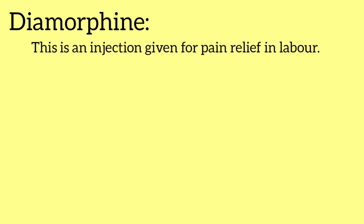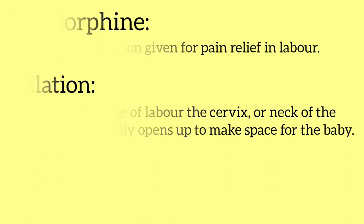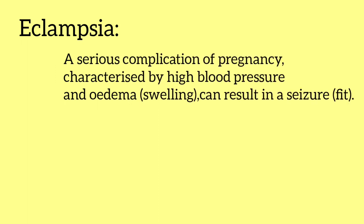Diamorphine is an injection given for pain relief in labor. Dilation or dilatation is the first stage of labor, where the cervix or neck of the womb gradually opens up to make space for the baby. Eclampsia is a serious complication of pregnancy characterized by high blood pressure and edema, and can result in seizures.